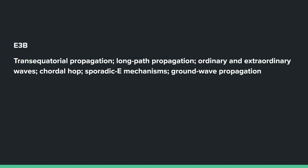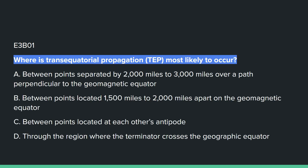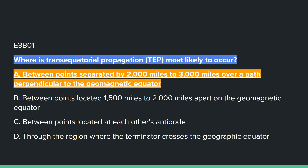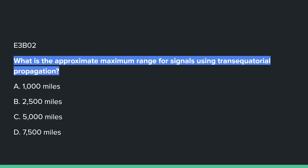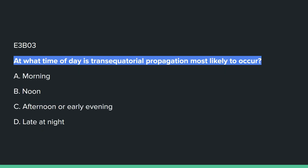E3B covers transequatorial propagation, long path propagation, ordinary and extraordinary waves, chordal hop, sporadic E mechanisms, and ground wave propagation. E3B01: Where is transequatorial propagation most likely to occur? Answer is A: between points separated by 2,000 to 3,000 miles over a path perpendicular to the geomagnetic equator. E3B02: What is the approximate maximum range for signals using transequatorial propagation? C: 5,000 miles. E3B03: At what time of day is transequatorial propagation most likely to occur? C: afternoon or early evening.